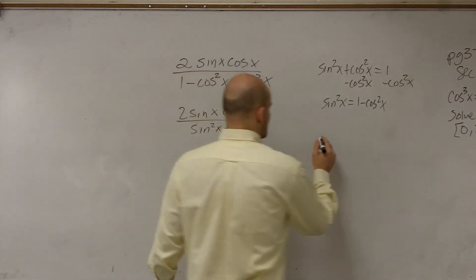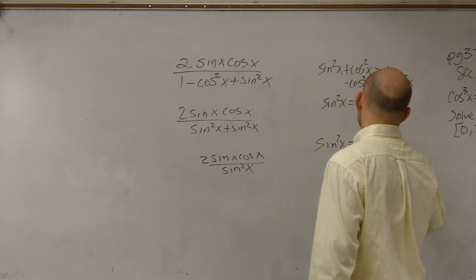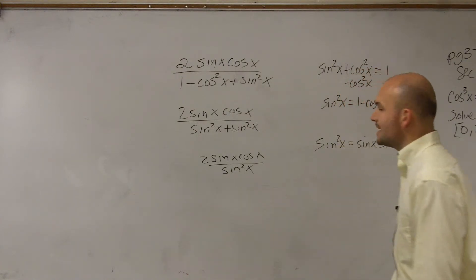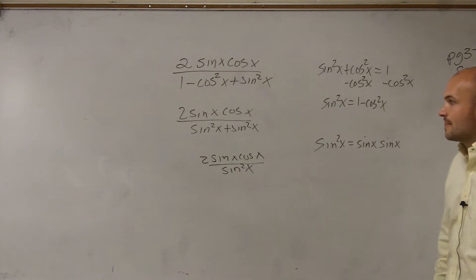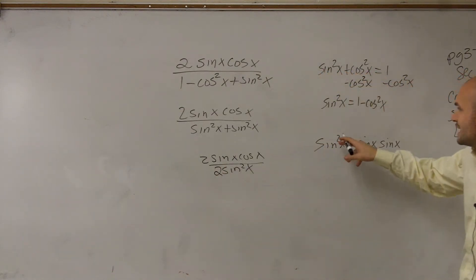Now, the next thing you guys need to remember is sine squared of x is equal to sine of x times sine of x. Yeah, it is a 2. Sorry, thank you. So we have sine squared of x is equal to sine of x times sine of x, right?